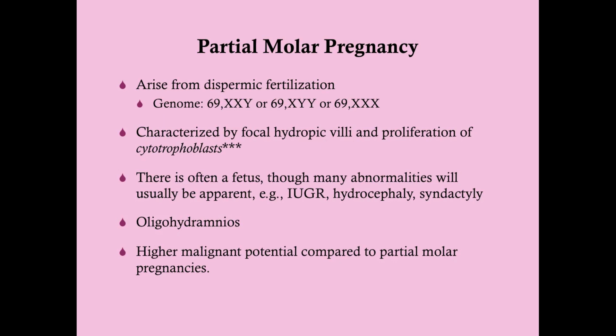The uterus may measure small for dates due to oligohydramnios — unlike the complete molar pregnancy, where the uterus measures large for gestational age because it is filled with hydropic chorionic villi. In partial molar pregnancy, the uterus is smaller because of the oligohydramnios. There is a lower malignant potential in partial compared to complete molar pregnancies: less than 5% of partial molar pregnancies will go on to become invasive, and very few will progress to choriocarcinoma.